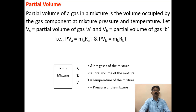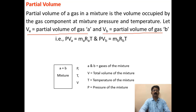Coming to the partial volume: partial volume of a gas in a mixture is the volume occupied by the gas component at mixture pressure and temperature. If VA is the partial volume of gas A and VB is the partial volume of gas B, then the characteristic gas equation is P into VA equals MA RA into T. Here P is the mixture pressure with no suffix, and T is the mixture temperature with no suffix. For the rest of the properties, suffix A is used. Similarly for B.